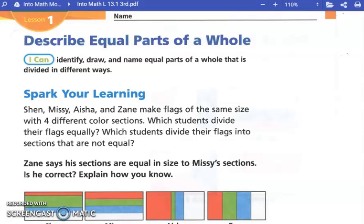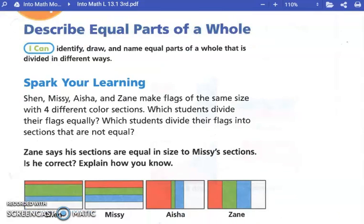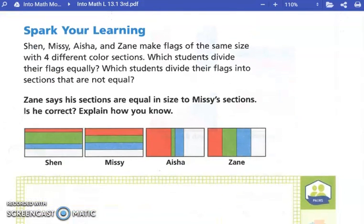Spark your learning. Shen, Missy, Aisha, and Zane make flags of the same size with four different colored sections. Which students divide their flags equally? Who divided their flags equally? Missy and Zane.